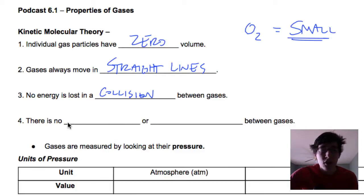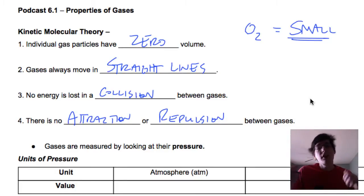And then finally, there is no attraction or repulsion. Gases do not attract one another, and they do not repel one another. They're indifferent. They don't care about the other gas that's there. Those are the four assumptions we're going to come back to frequently throughout this chapter. You're going to be asked to explain gases using these four assumptions.